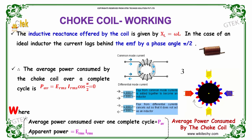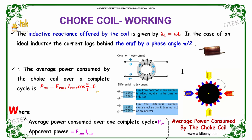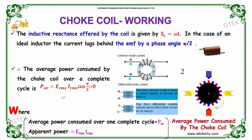So, the average power consumed by the choke coil over a complete cycle is given by E_RMS × I_RMS × cos(π/2) = 0. The average power consumed over one complete cycle P_AV is zero, and the apparent power is E_RMS × I_RMS.